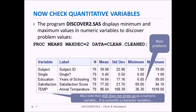We're not really interested in subject and single even though they're numeric variables. We're interested in education, satisfaction, and temp for this particular exercise. Notice here that there's problems with all three of them.